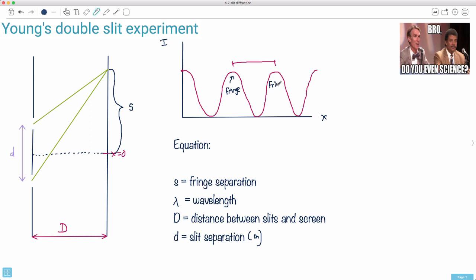We've got fringe separation, which will be s. S is the fringe separation, also in meters—that's the distance between your maxima. Your slits and your screen are separated by some distance, which is capital D, or this distance right here. The larger distance is capital D, usually this distance is way larger than these.